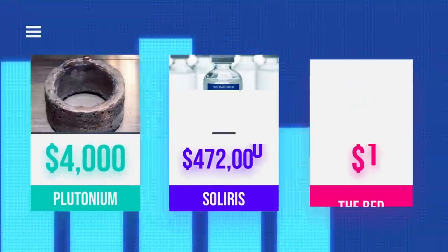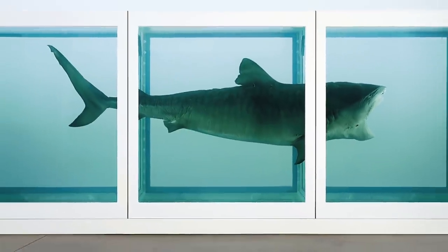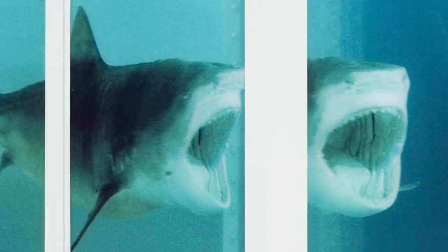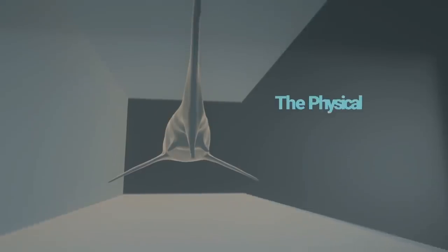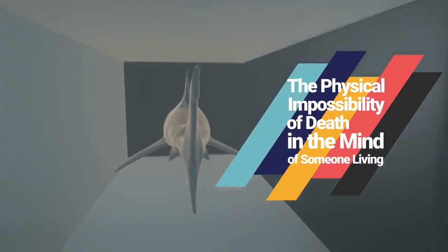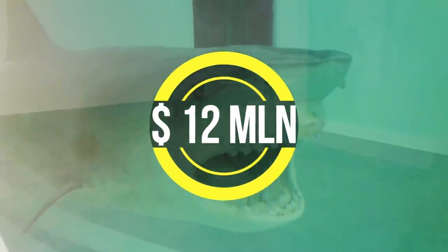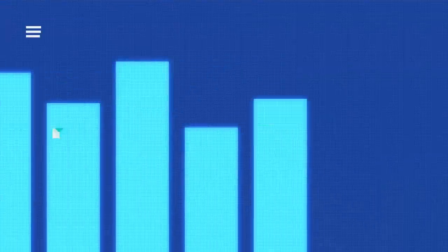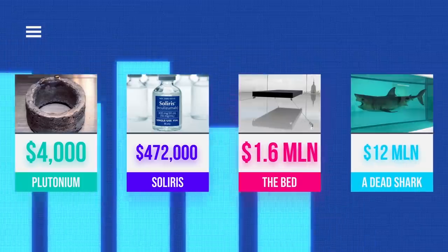Do you know what's even more expensive? A dead shark preserved in a glass tank of formaldehyde. It's a cult masterpiece of a contemporary British artist, Damien Hirst, entitled The Physical Impossibility of Death in the Mind of Someone Living. In 2004, it was sold for $12 million. This shark turned out to be almost 25 times more expensive than the most expensive drug on Earth.